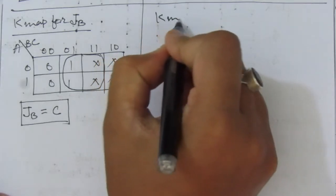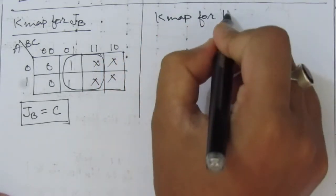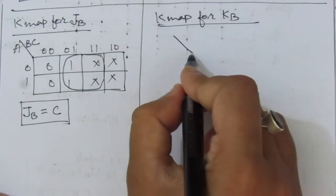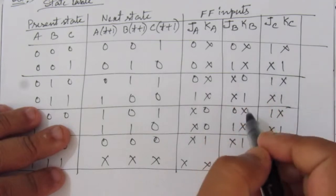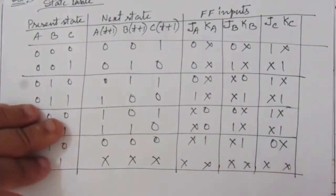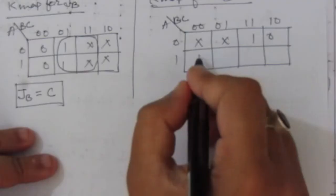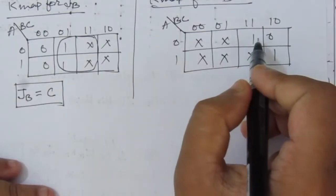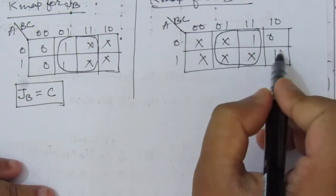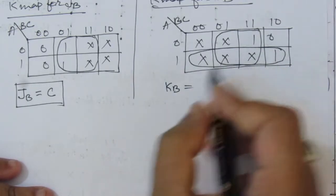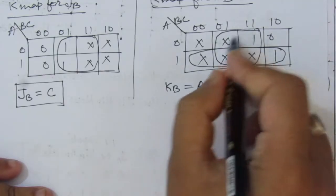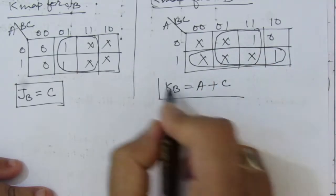For KB, we use another three-variable K-map and fill in the KB values: don't care, don't care, 0, 1, don't care, don't care, 1, don't care. We get two combinations from the map. Therefore, KB = A + C.